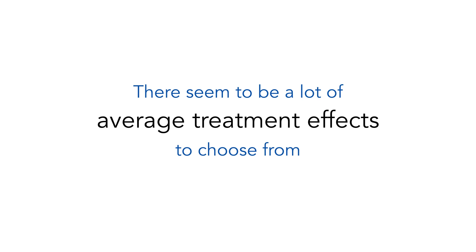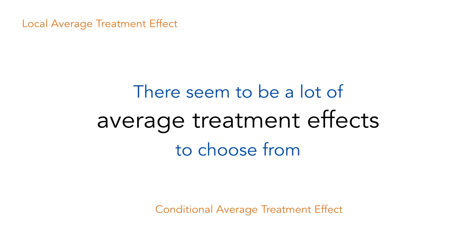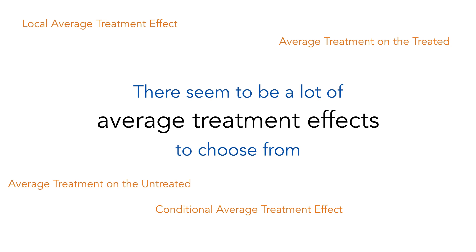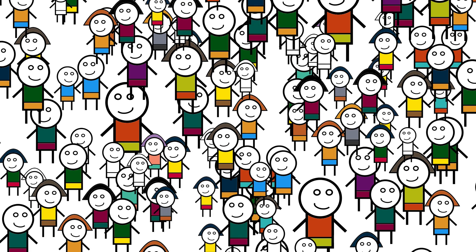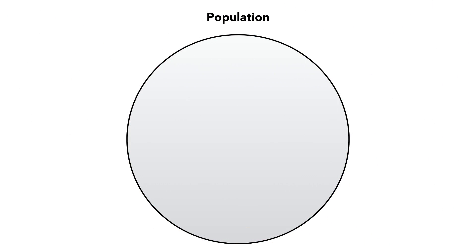We've talked about many different kinds of average treatment effects over lots of different subsets of people. Now I want to talk about the relationship between each one of these average treatment effects, because it can be kind of confusing. So let's start by just drawing our entire population of units in this circle. If we take the average unit level causal effect for everyone in this circle, that gets us the average treatment effect — the average unit level causal effect for everyone. Very important.